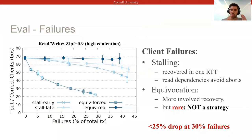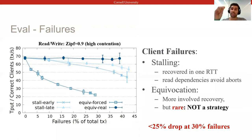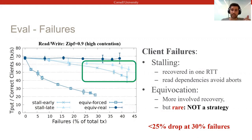To quantify how robust Basel remains when clients misbehave like this, we evaluated the impact that Byzantine clients can have on the throughput of individual correct clients, shown on the y-axis. The impact of stalls, highlighted in green, is fairly low since correct clients can usually finish them in a single round trip.